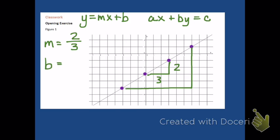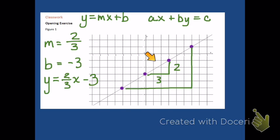My y-intercept b can be read right off the graph easily. The y-intercept is negative three. So now all that's left to do is to put that information into my equation and write it. Every point on this line is going to satisfy y is equal to two-thirds times x minus three. It seems reasonable that we could use this strategy — using the slope-intercept form y equals mx plus b — for any graph, given the y-intercept and being able to determine the slope.